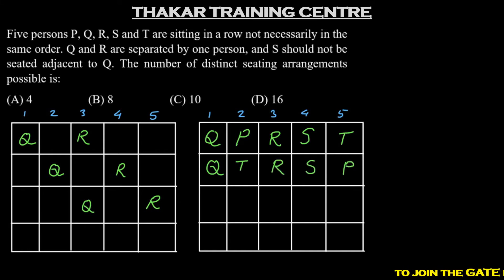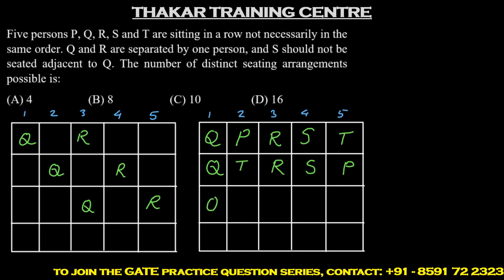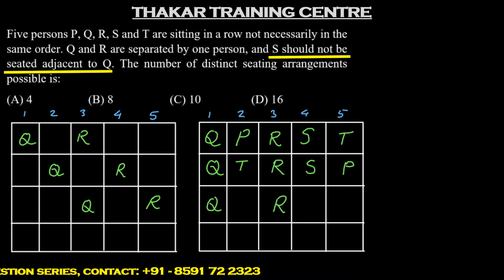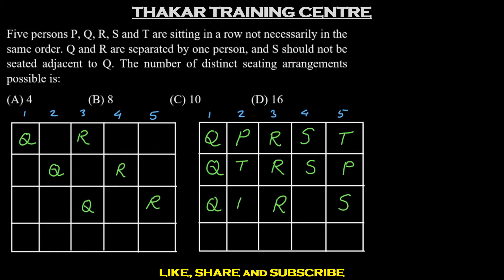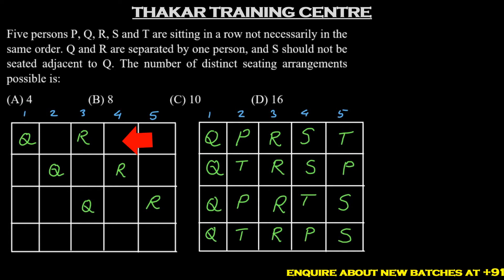S can also occupy position 5 when Q and R occupy positions 1 and 3, since the only position not allowed for S is position 2. Once again, P and T can occupy positions 2 and 4 in two ways. So if Q and R occupy positions 1 and 3, then we have four such arrangements possible.